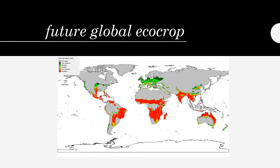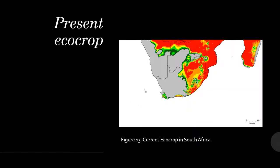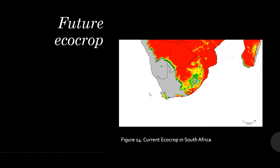This slide shows the future global eco crop distribution, which shows that the parts most favorable are still around the tropical south of the world. The current eco crop in South Africa is mostly red and concentrated on the eastern side of the country. In the future eco crop for South Africa, the climatic conditions are moving more inland and covering about half of South Africa, meaning it is becoming more and more suitable for the sustainability of the crop.